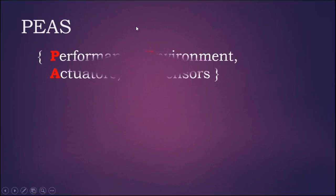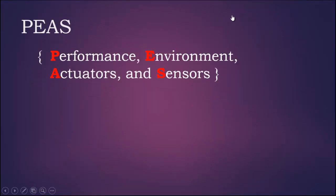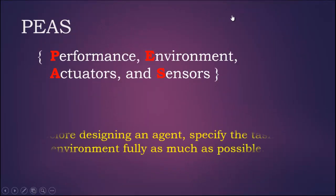PEAS stands for Performance, Environment, Actuators, and Sensors. Before designing an agent, we need to specify the task environment fully as much as possible.